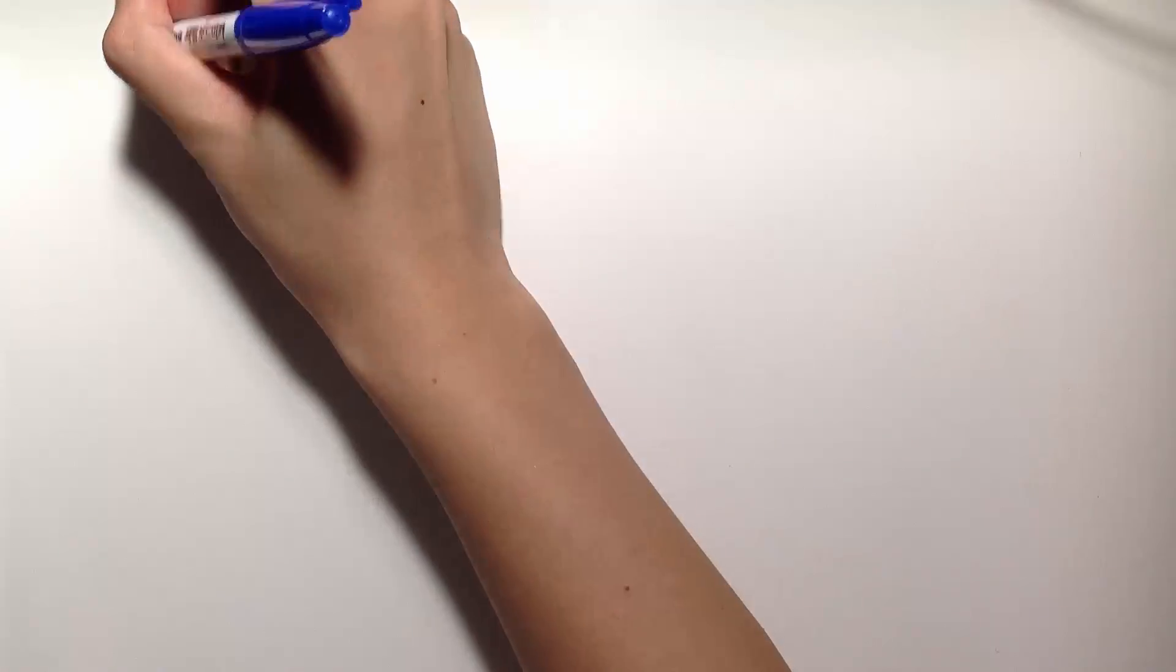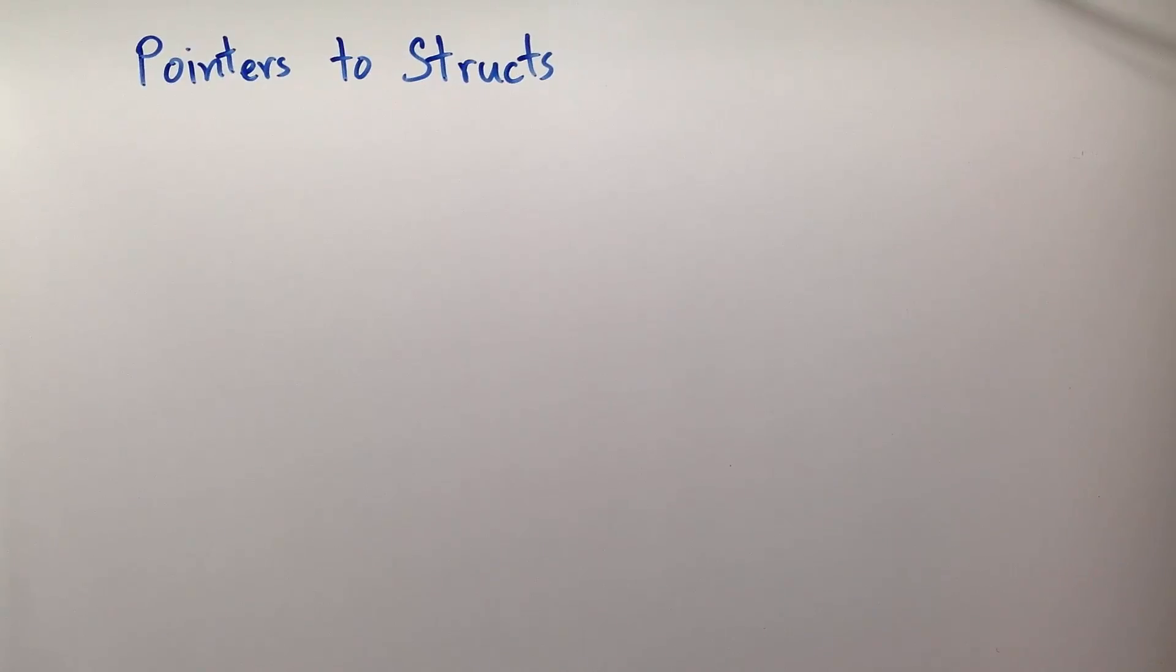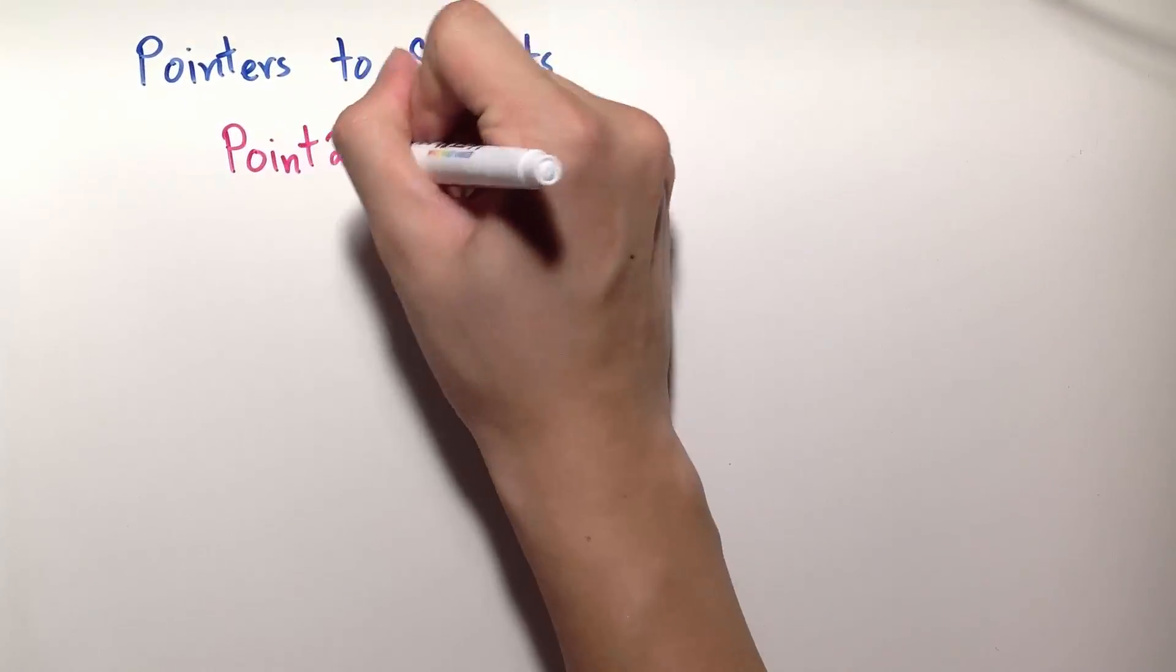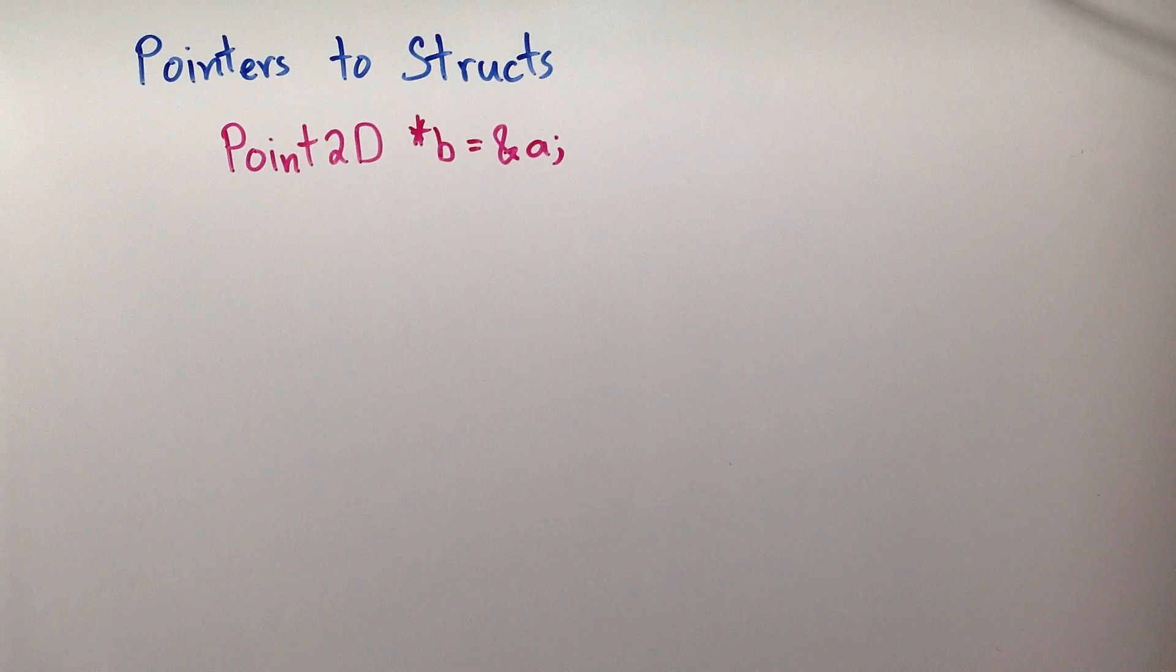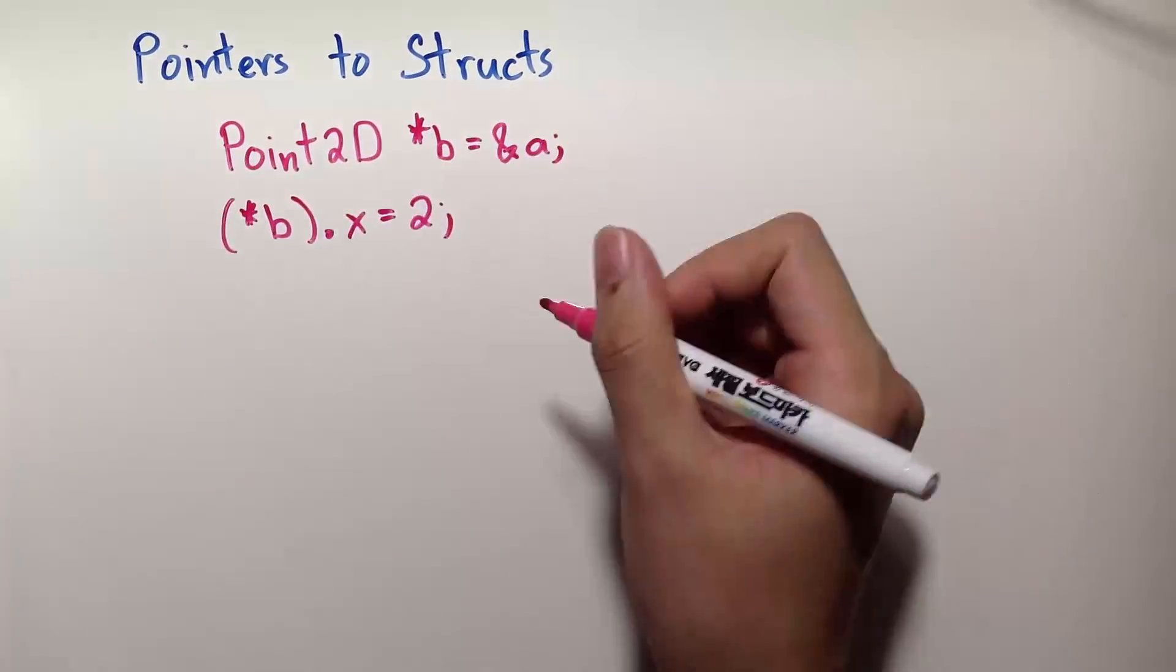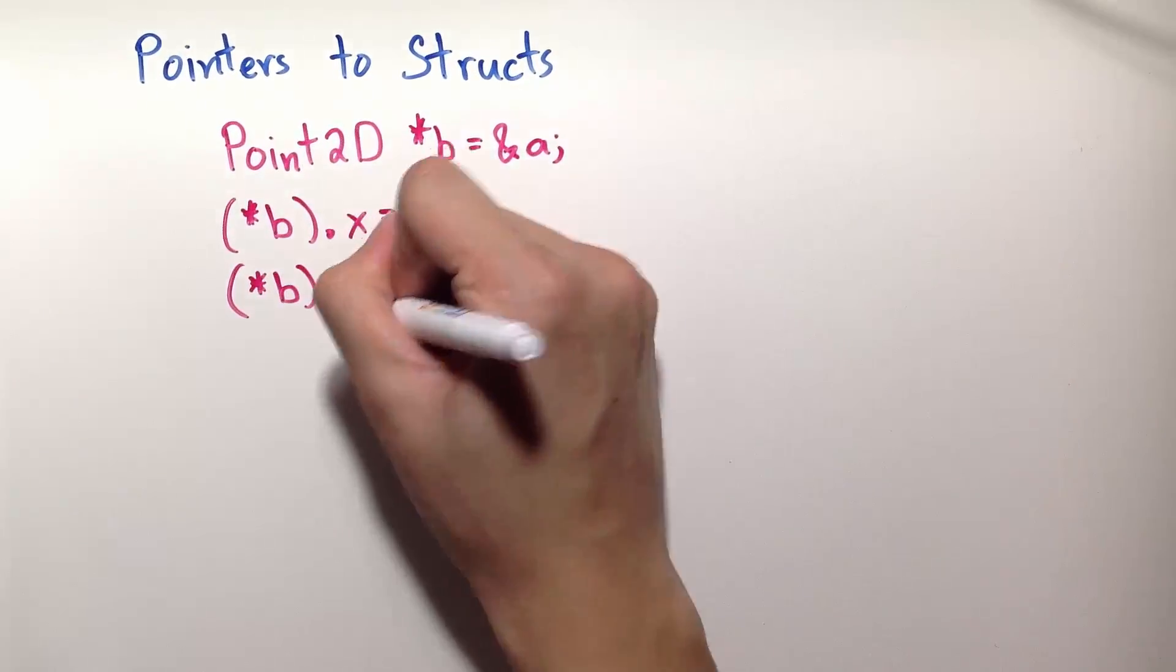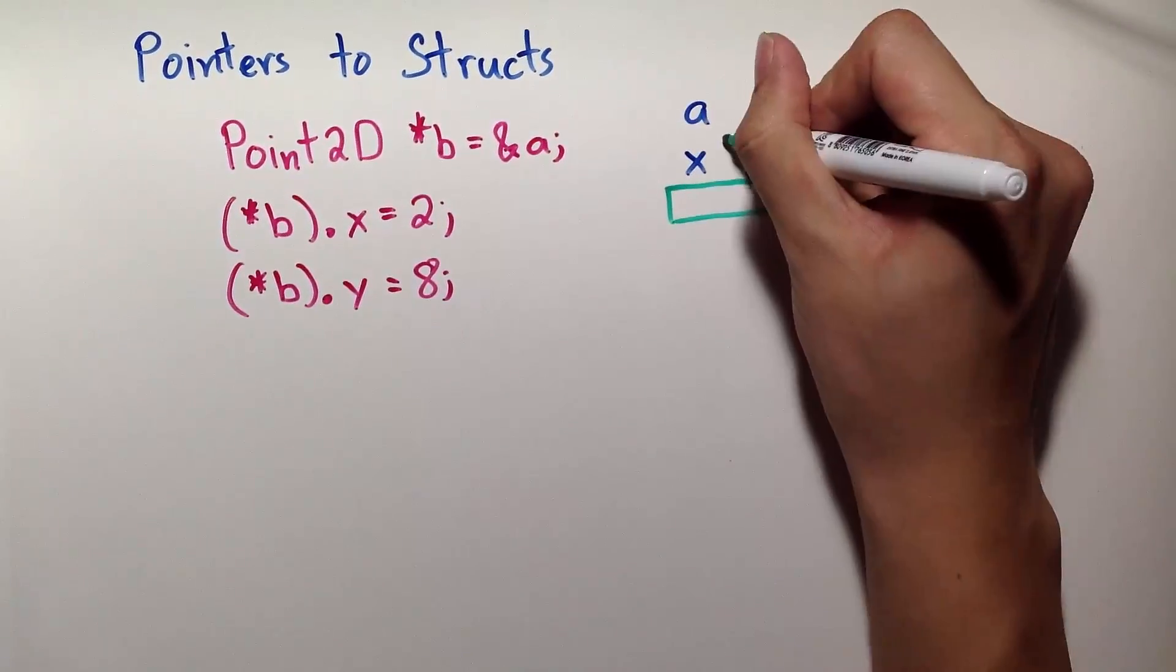Now let's have pointers to structures. Pointers to structures are similar to pointers to other data types. To declare a pointer, you need the data type to point to followed by the asterisk and the pointer name, and you can initialize it to the address of a variable of that data type. In memory, it looks like the following. A has two children, x and y, both being float.